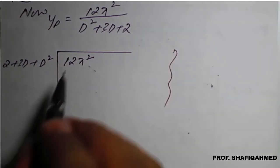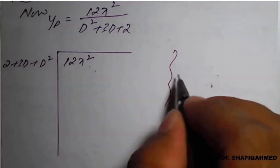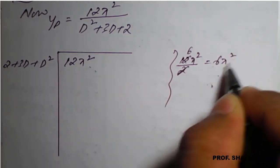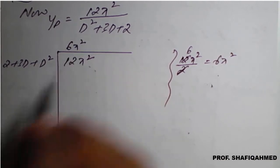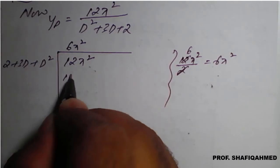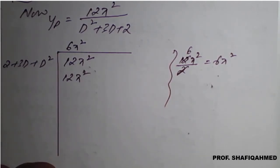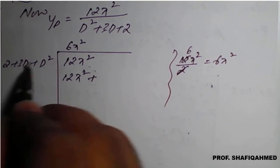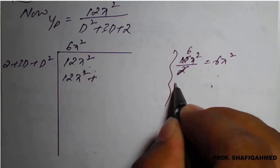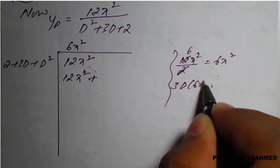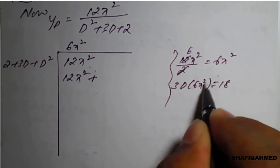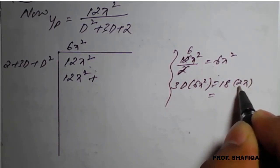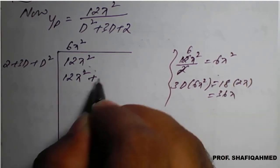For the first step, divide the first term of the numerator by the first term of the divisor: 12x square divided by 2 gives 6x square. Write 6x square in the quotient. Then, 6x square times 2 gives back 12x square, plus 3 times the differentiation of 6x square gives 3 times 12x, which is 36x.